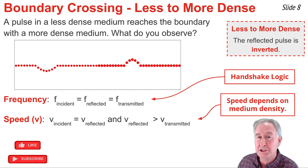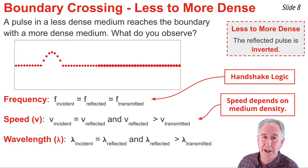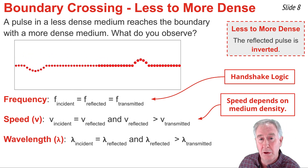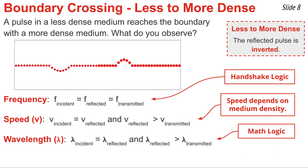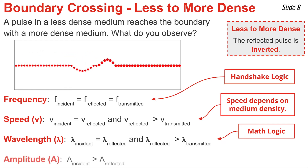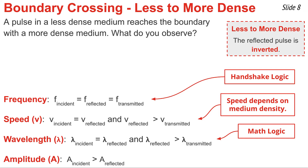This is because speeds are always greatest in the least dense material. The fourth point, visible in the animation, is that the wavelengths of the incident and reflected pulses are equal to one another, but both are greater than the wavelength of the transmitted pulse — consistent with math logic. Finally, the amplitude of the reflected pulse is less than the amplitude of the incident pulse, due to energy considerations: since some energy is transmitted across the boundary, the reflected pulse carries less energy.